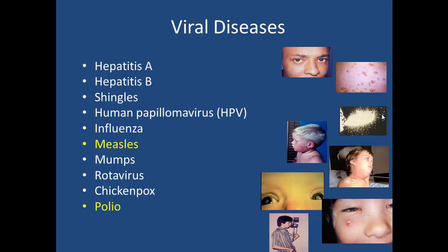Viral diseases have a longer history of vaccine development. Some of the earliest vaccine programs target viral diseases, and some are actually targeted for eradication. Specifically, polio is the most recent one, and measles is close behind. Those particular diseases will probably be eradicated in the not-so-distant future. There's also a lot of research going on for many diseases that have no vaccine yet but hopefully will be available soon.